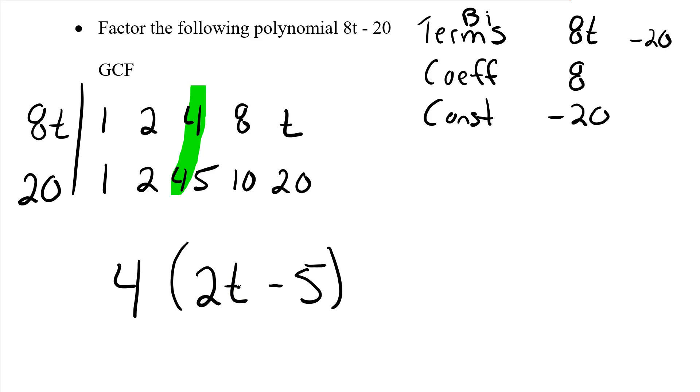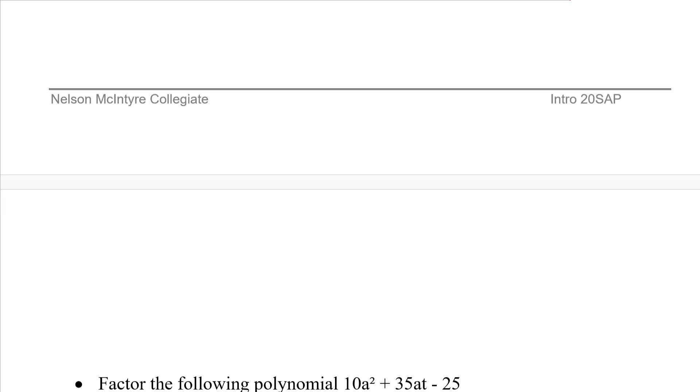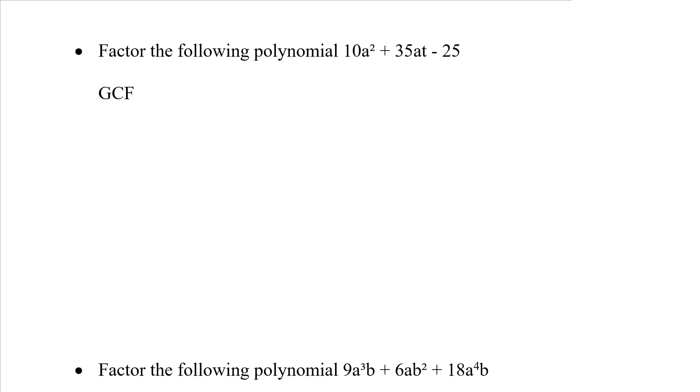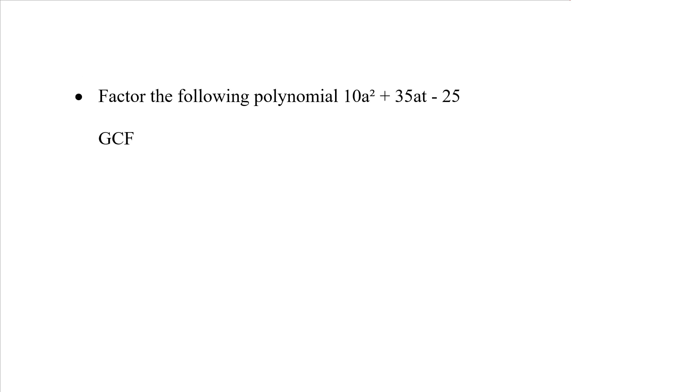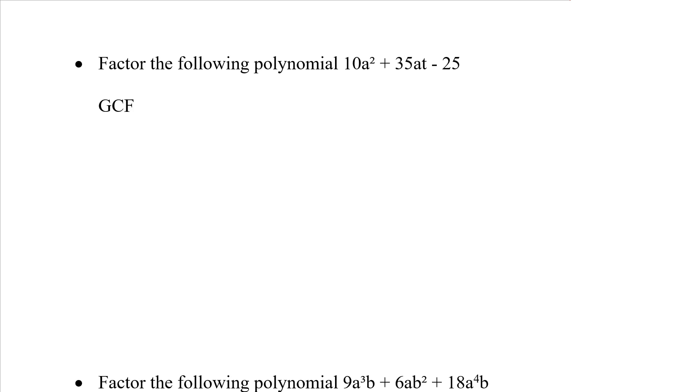Let's move on to our next page. We're going to factor the following polynomial: 10a² + 35at - 25. Let's start thinking about the terms. The terms are 10a², positive 35at, and minus 25. What are the coefficients? Coefficients here are positive 10 and positive 35 in front of the letters. And finally, what are the constants? Numbers by itself would be negative 25.